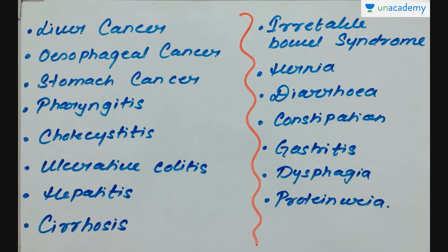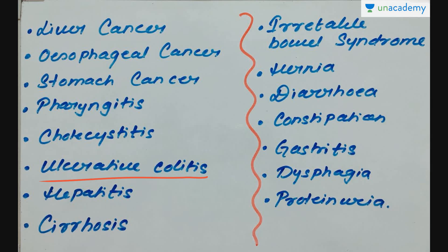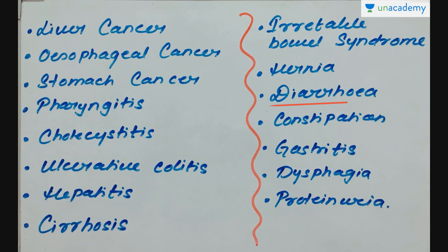Here is a list of some more diseases of the digestive system: liver cancer, esophageal cancer, stomach cancer, pharyngitis, cholecystitis, ulcerative colitis, hepatitis, cirrhosis, irritable bowel syndrome, hernia, diarrhea, and constipation.